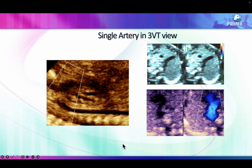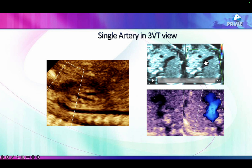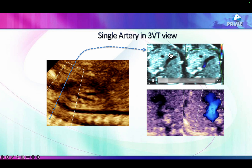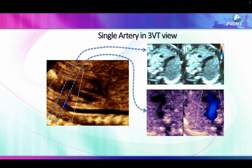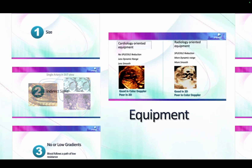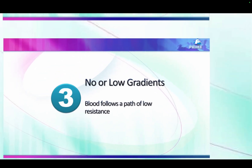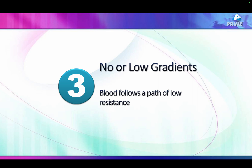Another sign is what we call the 'eye sign' seen on the three-vessel view, which I'll describe in subsequent slides. On the three-vessel view, you see a single vessel where you should have seen both the pulmonary artery and the aorta. The reason is that when cutting this section in TGA, you're seeing the aorta at one plane, and at a different plane you would see the pulmonary artery, since both vessels are not on the same plane.